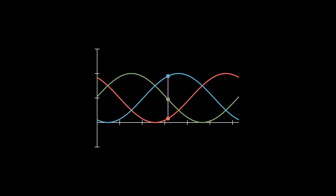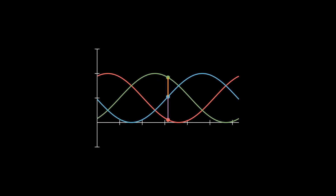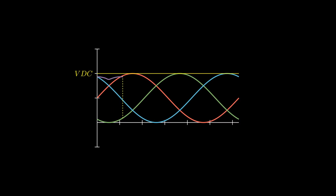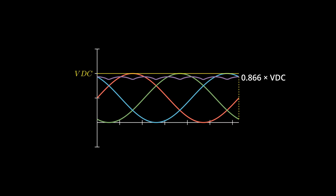If we calculate, the maximum difference between the highest and lowest phases in a sinusoidal waveform only reaches approximately 0.866 times VDC, meaning we are not fully utilizing the supply voltage. This is a drawback, as the current that can be delivered to the motor is limited by the amplitude of this signal.